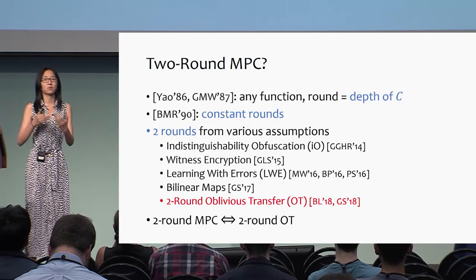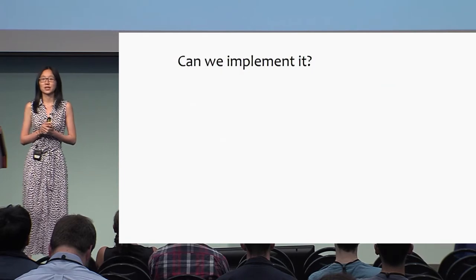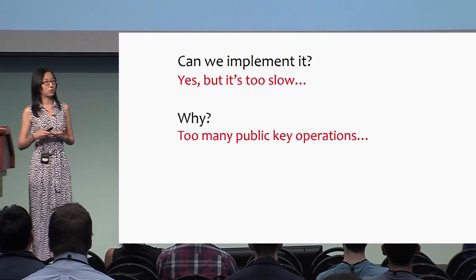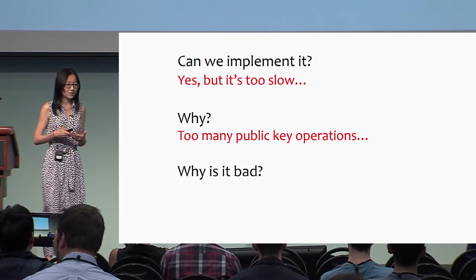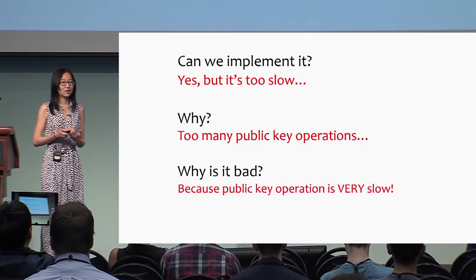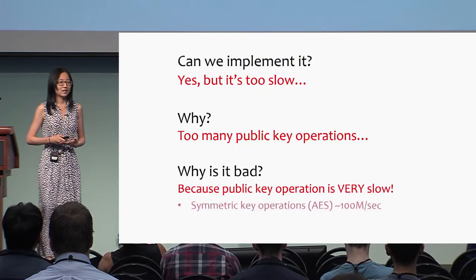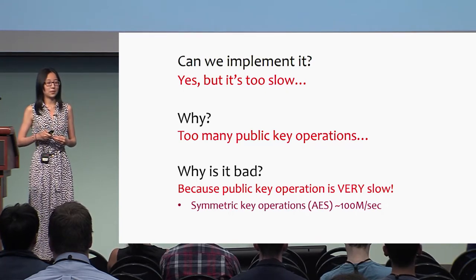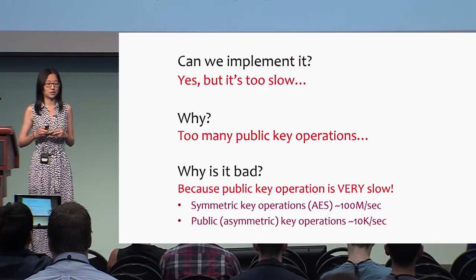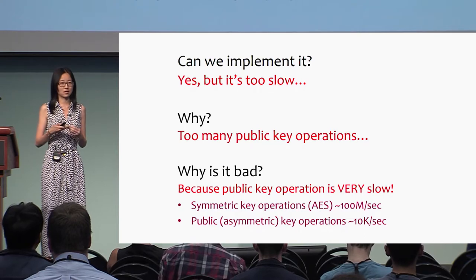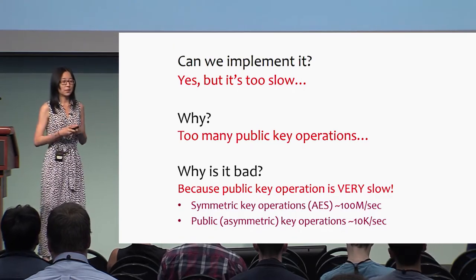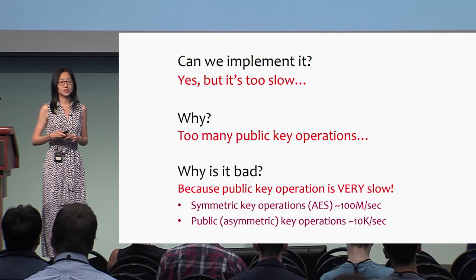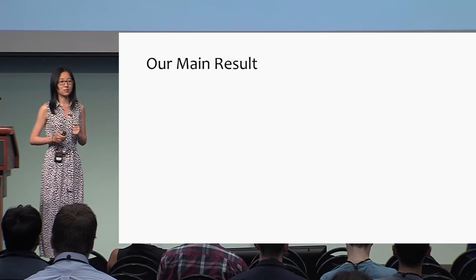Now we can construct two-round MPC from the minimum assumption. What's next? Can we implement it? Well, you can, but it's just too slow. One of the reasons is that there are too many public key operations. Public key operations are very slow. Compared to symmetric key operations like AES, which can be done hundreds of millions of times per second, public key operations can only be done tens of thousands per second. So it's very important to minimize public key operations.